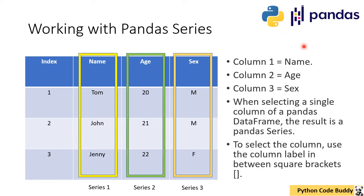Further analyzing: this DataFrame can be split into three columns, or you can call them three Series. Series one is column one for name — Tom, John, Jenny. Series two is for age. Series three is for sex. And the index is 0, 1, 2. When selecting a column of a Pandas DataFrame the result is a Pandas Series. To select a particular column you have to use the column label in between square brackets.